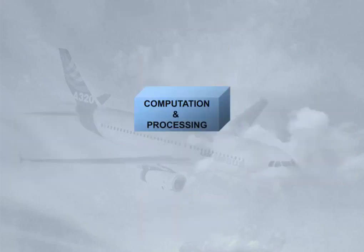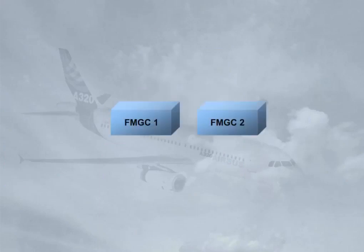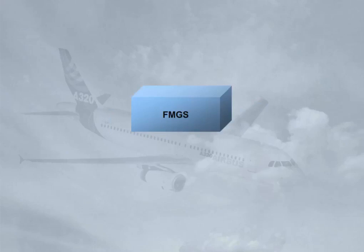For the AFS in the A320 family, computation and processing are done by two Flight Management Guidance Computers, FMGCs. The two FMGCs are identical and normally work together, so for training purposes we will group them as the Flight Management Guidance System, the FMGS.